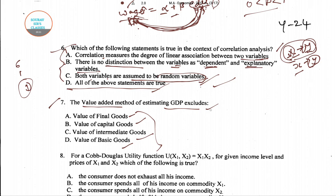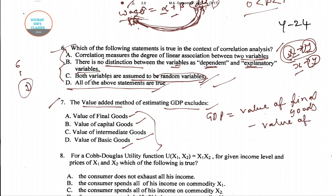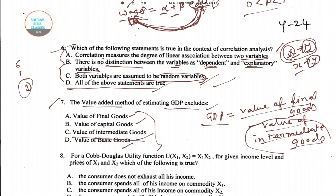GDP by the value added method equals the value of final goods minus the value of intermediate goods. So it is quite evident that the value added method excludes — that is, eliminates by subtracting — the value of intermediate goods. Therefore option C is the right answer for question number seven.